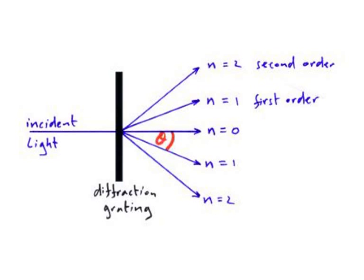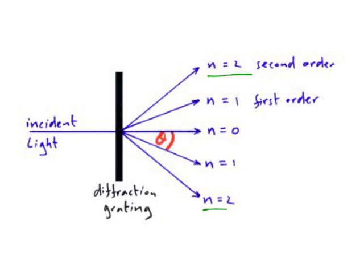We need to make sense of this by concentrating on what's happening at the slits in the diffraction grating and how the laser beam is interacting with those slits at the point of contact. Zooming in, we'll consider first the two first order images, and then the two second order images, to see how those are working.